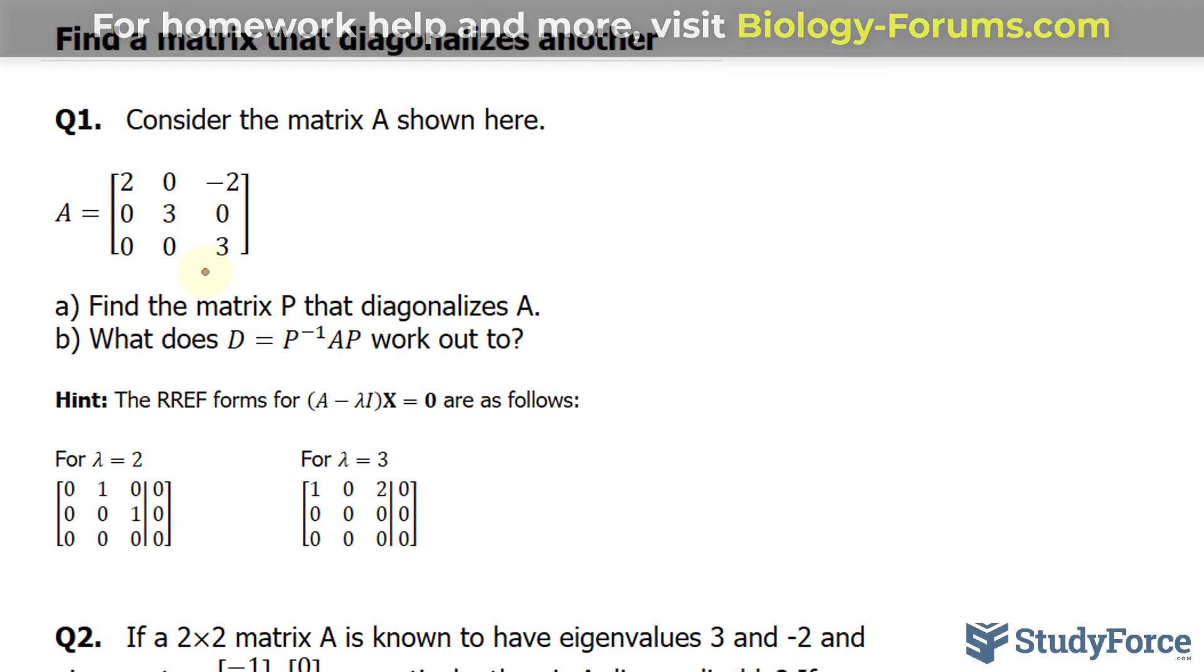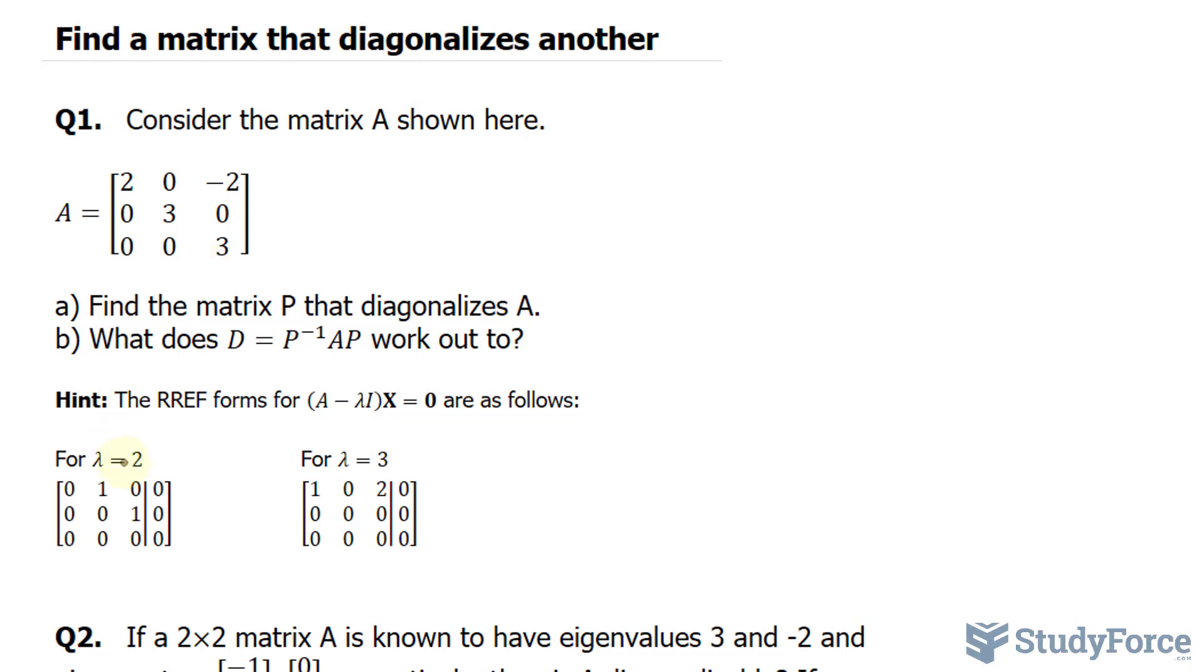To do this, they've given us a hint. They've told us the eigenvalues: it's 2 and 3 repeated. I know that because we have the two 3s here. On top of that, they've given us this matrix, which is the row reduced echelon form. After we take this matrix, subtract it by the eigenvalue times its identity, and then reduce down to these row reduced echelon form matrices, we need these matrices to help us come up with the matrix P.